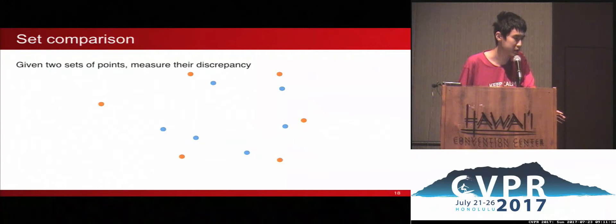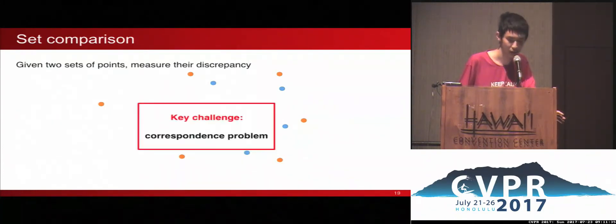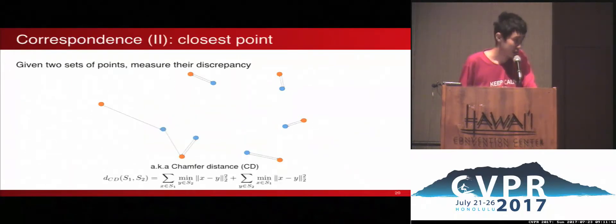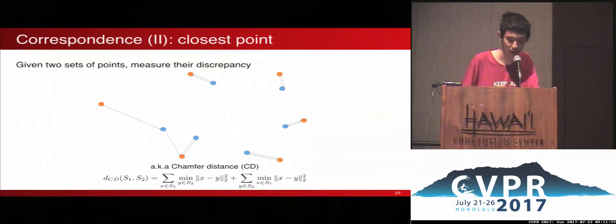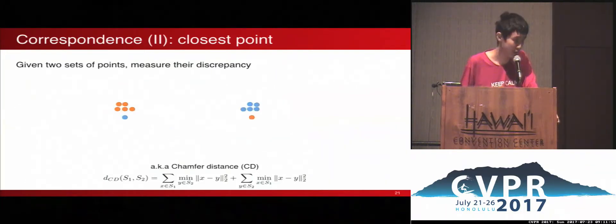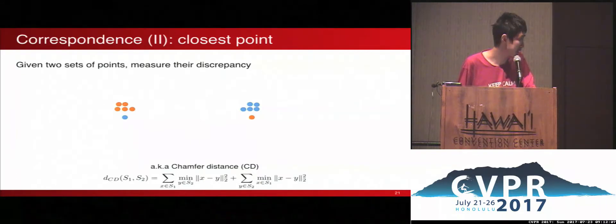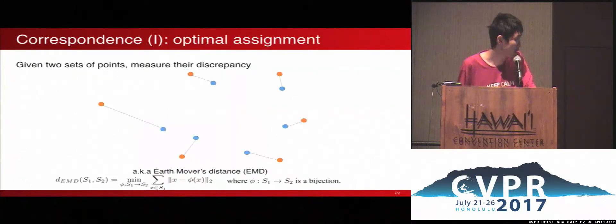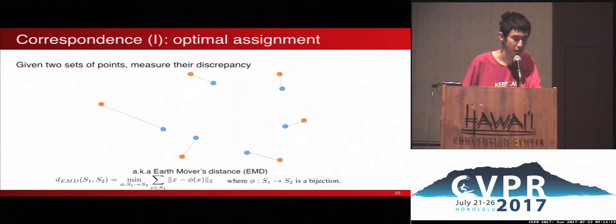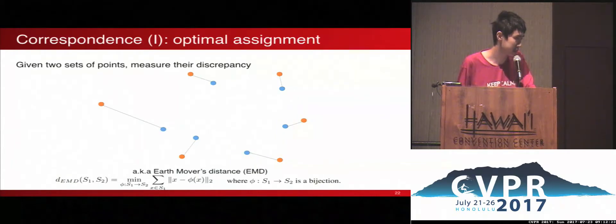Let's think about how to define the distance between unordered point sets. The key challenge is that they are unordered, so when computing distance we must find a way to align them and find correspondences. One naive way is to assign to each point in one set the nearest neighbor in the other set and sum those distances — this is called the Chamfer distance. One issue is that Chamfer distance cannot capture mismatch in point density; two very different sets can have a very low Chamfer distance. One way to address this is the Earth Mover's Distance (EMD), in which each point must be assigned to a unique point in the other set, computed by minimum weight matching.